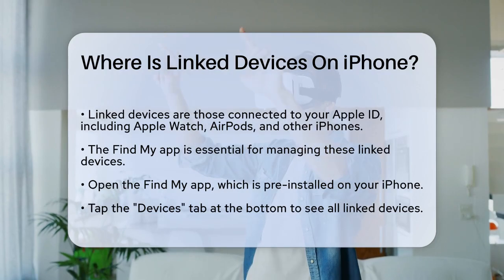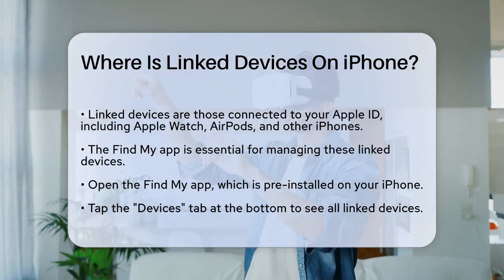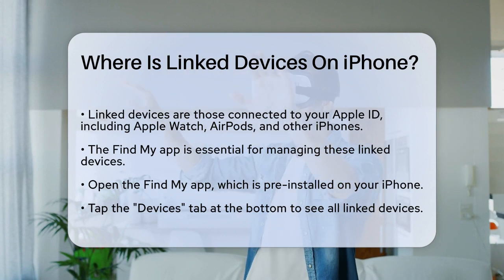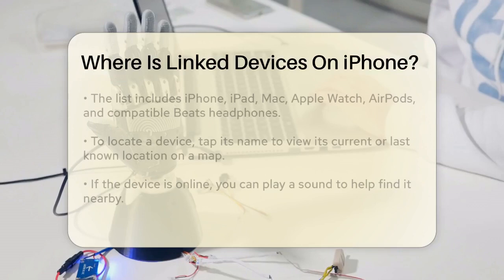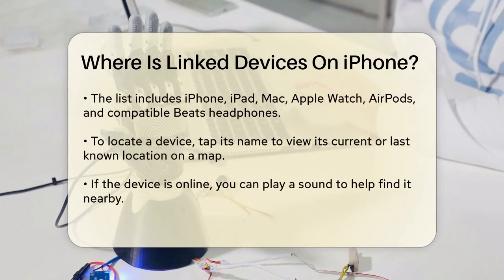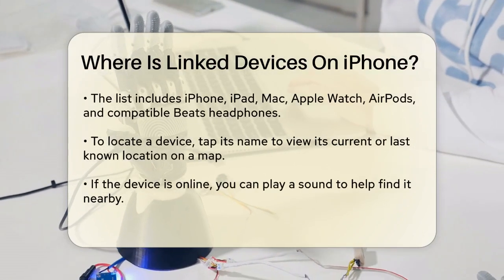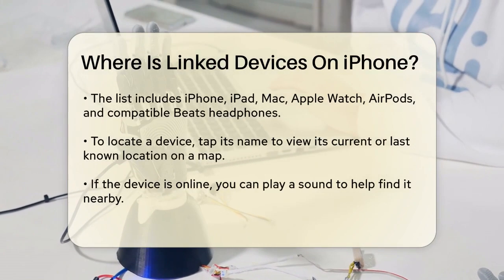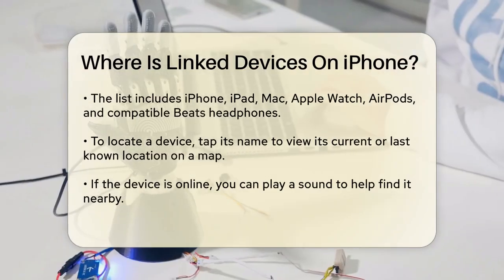First, open the Find My app on your iPhone. You'll find this app on your home screen, and it's usually pre-installed on all Apple devices. Once you're in the Find My app, tap on the Devices tab at the bottom of the screen. Here, you'll see a list of all the devices linked to your Apple ID.